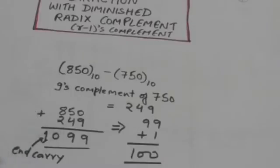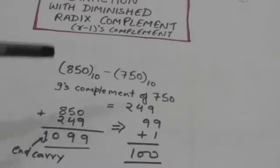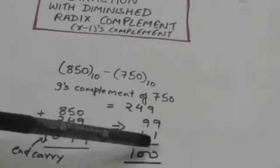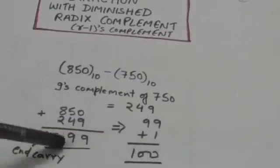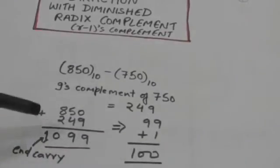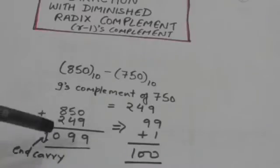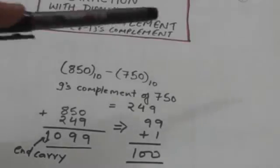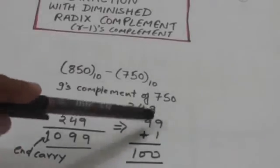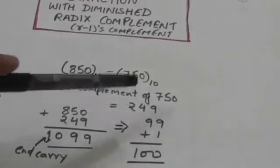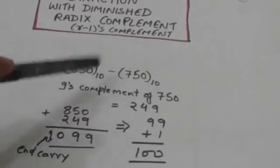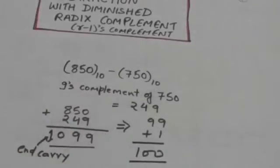Here the sum produces an end carry, so we have to add 1 to the least significant digit of the sum. The sum is 99 and an end carry of 1 is produced. When we add 1 to the least significant digit, the result is 100. So 850 minus 750 is 100.